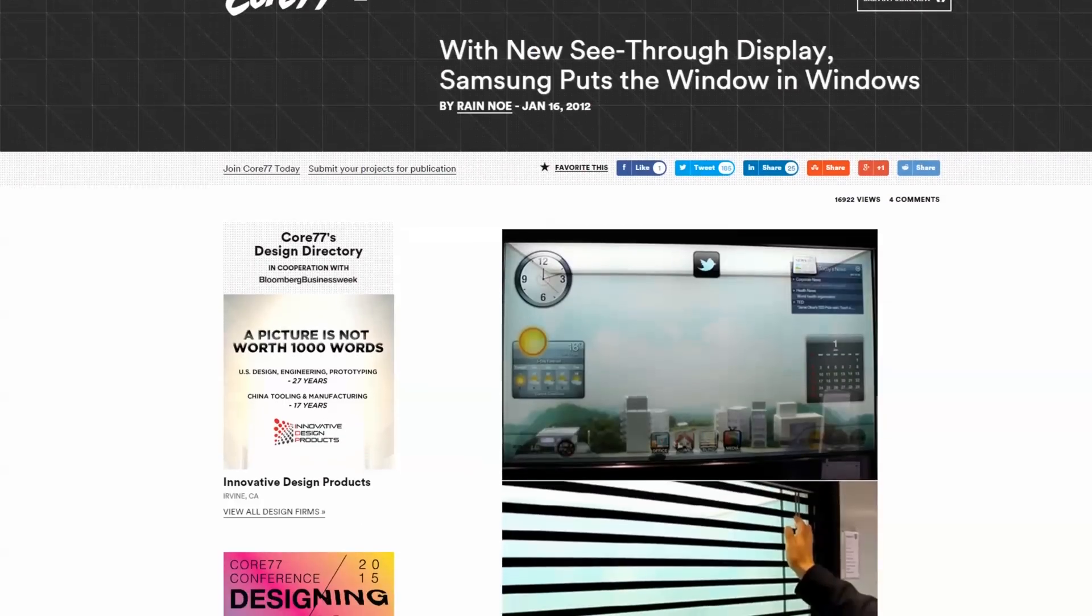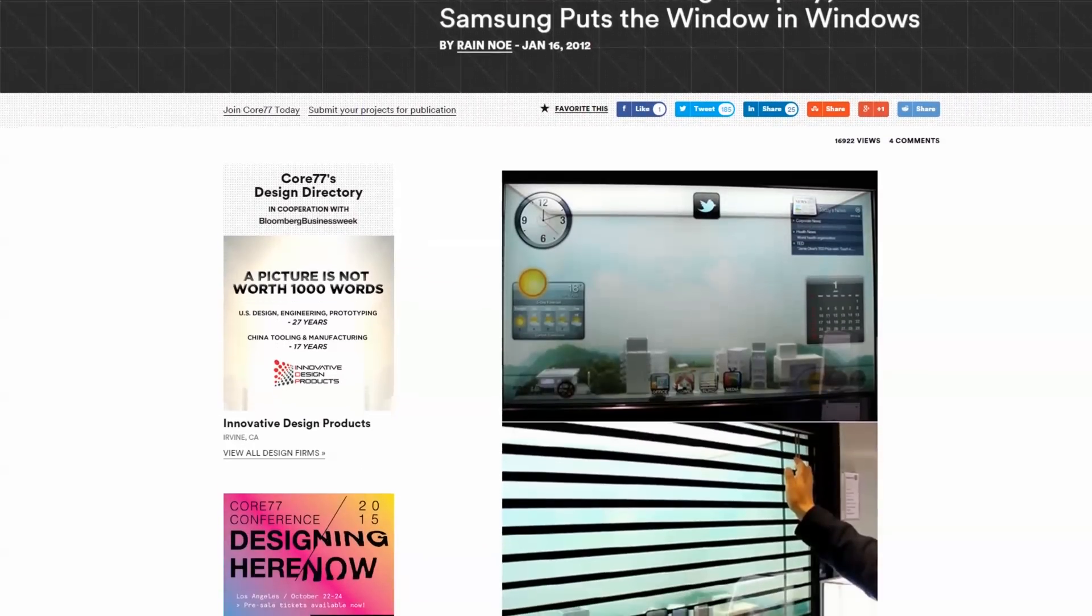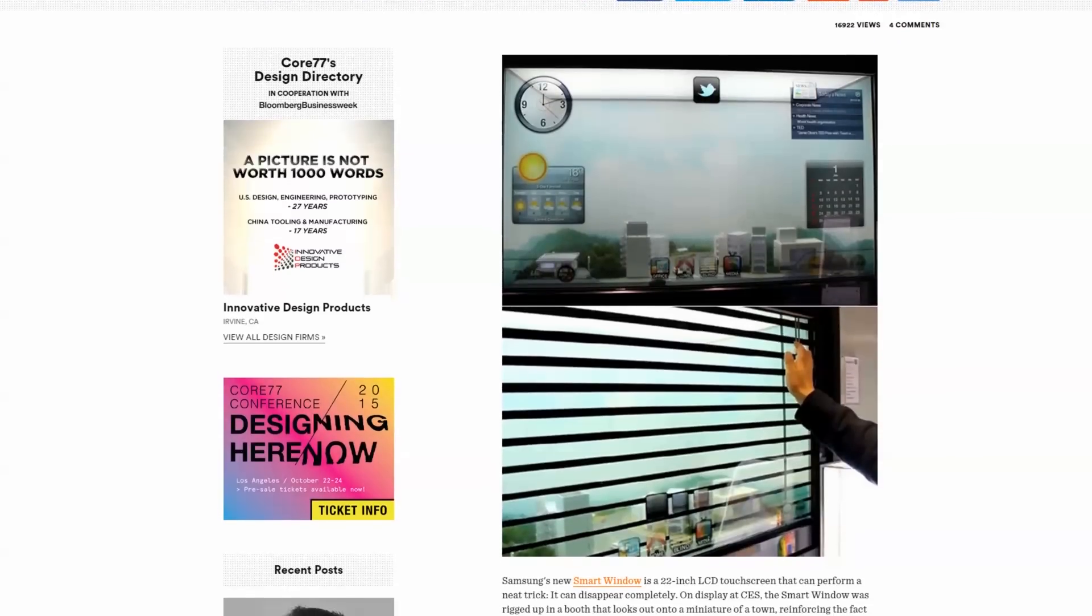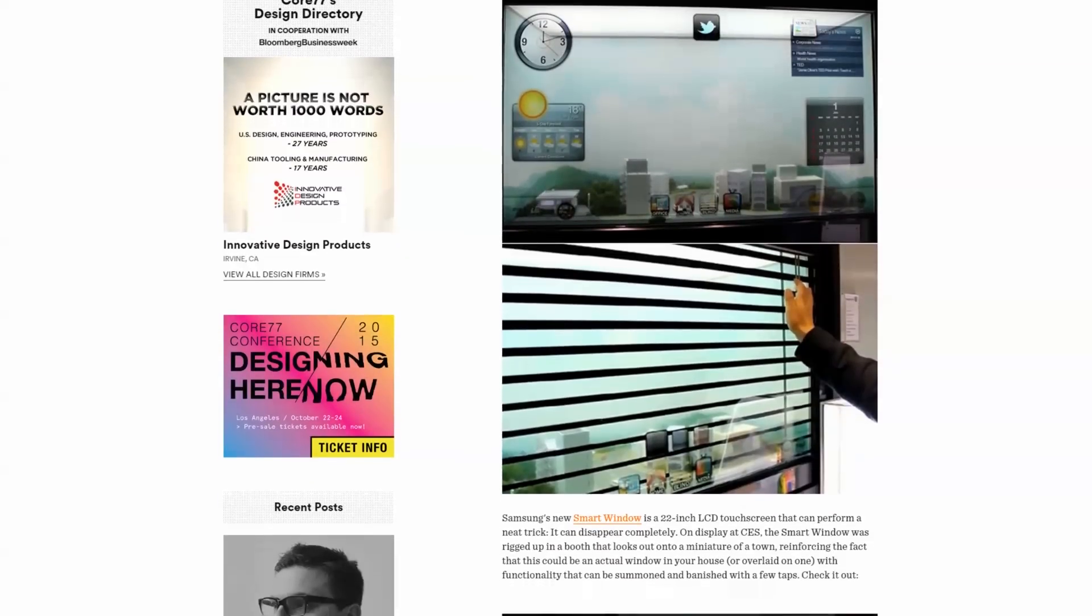In fact, transparent LCDs were notably shown off by Samsung in its smart window, which works like a regular window in your home but can display the weather, email, travel information, and other useful stuff, and can even act as a digital Venetian blind when you want to darken the room. But this concept only works because the sun provides backlighting during the day.